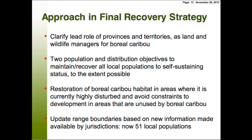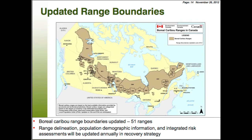We have also changed the number of local populations — we now have 51 local populations of boreal caribou in Canada. The biggest changes were in Saskatchewan, where we used to have eight populations and now have two: a Boreal Plains and a Boreal Shield population. There were some minor changes in Alberta to where the ranges are, and the Chinchaga population (AB1), which used to have two populations including a little Deadwood population, has now been combined into one.